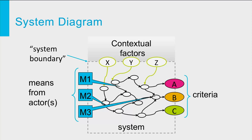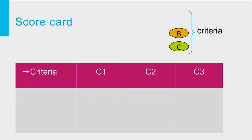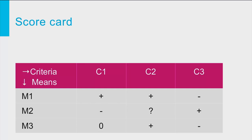Note that the elements of the system diagram also specify the structure of the so-called scorecard. A scorecard is a table where we put the criteria on the horizontal axis and the means on the vertical axis. If we have sufficient understanding of how the system works — that is, how the means affect the criteria — we can complete the scorecard by filling out the individual cells. For example, if means M1 will positively affect criteria C1 and C2, we put a plus sign in the related cell. Similarly, a minus sign indicates a negative impact of M1 on C3. If we expect no significant impact, we may put a zero in the cell, and a question mark if we don't know whether there will be an impact or what its direction will be.